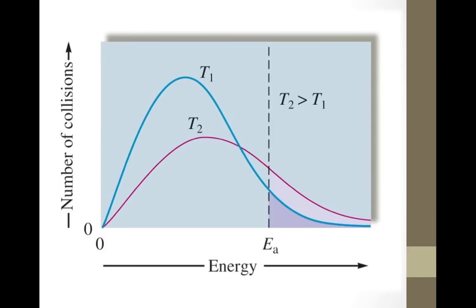At the higher temperature T2, the pink line, the pink curve crosses the dotted line—that's the activation energy—at a point higher than the lower temperature T1, the blue curve. At that higher point, there's a higher number of collisions. So at higher temperature, more particles collide with sufficient energy, so the rate of a chemical reaction increases.